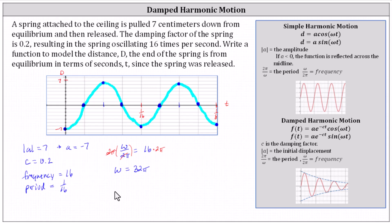Our function for the harmonic motion is d, or d of t, equals a, which is negative 7, times e to the power of negative ct, which is negative 0.2t, times cosine of omega t, which gives us cosine of 32 pi t.